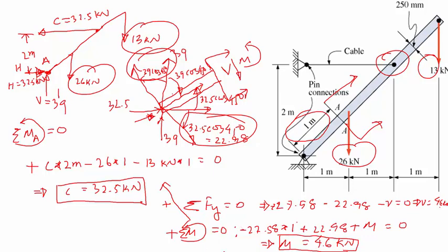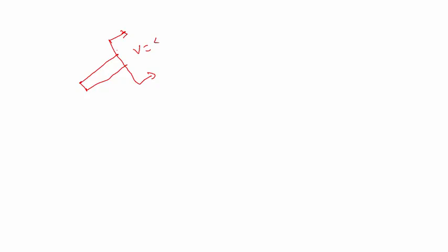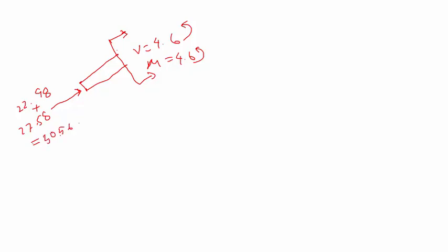Now let's redo the summary. At that plane, the shear force is 4.6 kN and the moment is 4.6 kN·m counterclockwise. I also have axial loading: the two axial components are 22.98 + 27.58 = 50.58 kilonewtons total axial load acting on that cross-section.